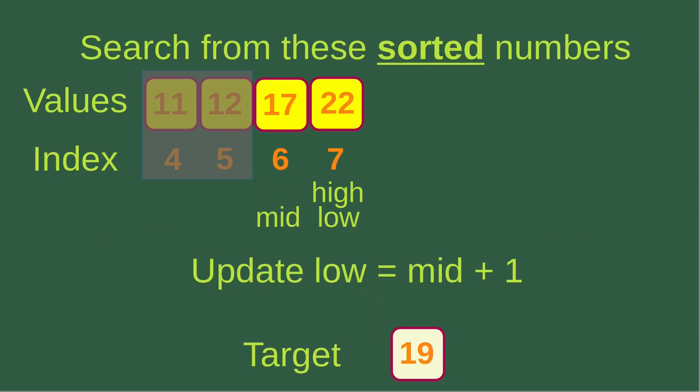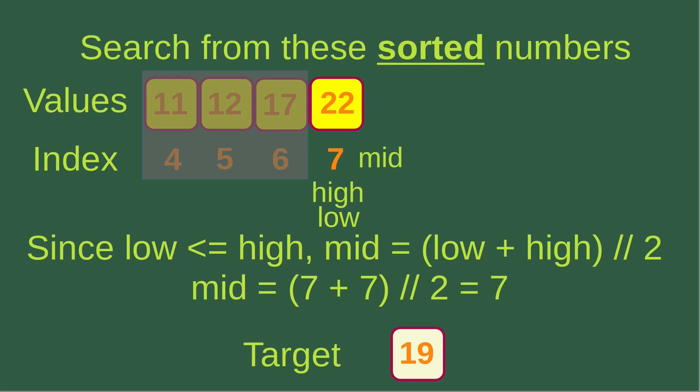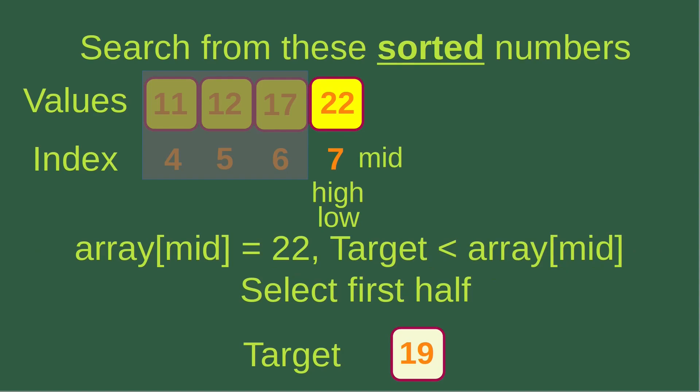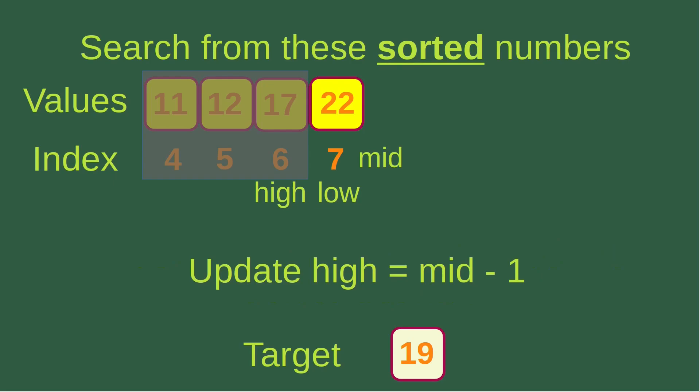I can update the low index to mid plus 1, so now the low index is 7. Since the low index is still smaller than or equal to the high index, I can still find out the mid-index, which is equal to 7. So now we have all three indices corresponding to index 7, and the middle element is 22. But our target is smaller than the middle element, so we have to choose the first half. I can update the high index to mid minus 1, so now the high index becomes 6.